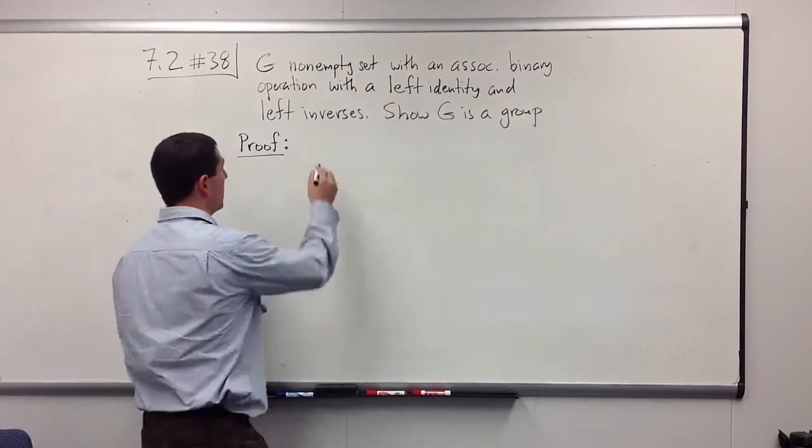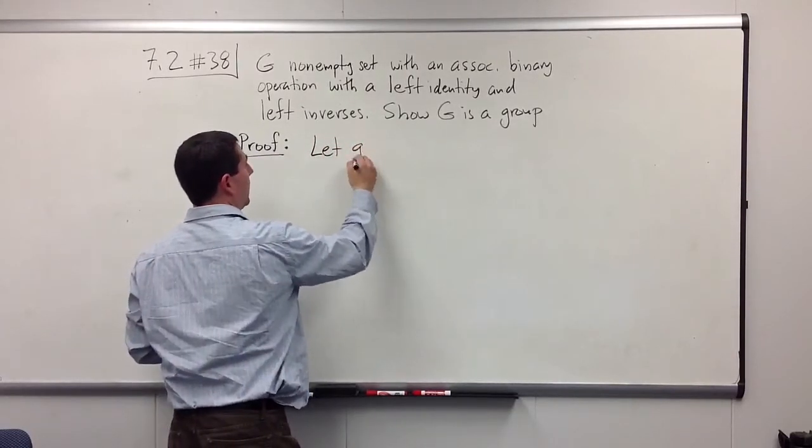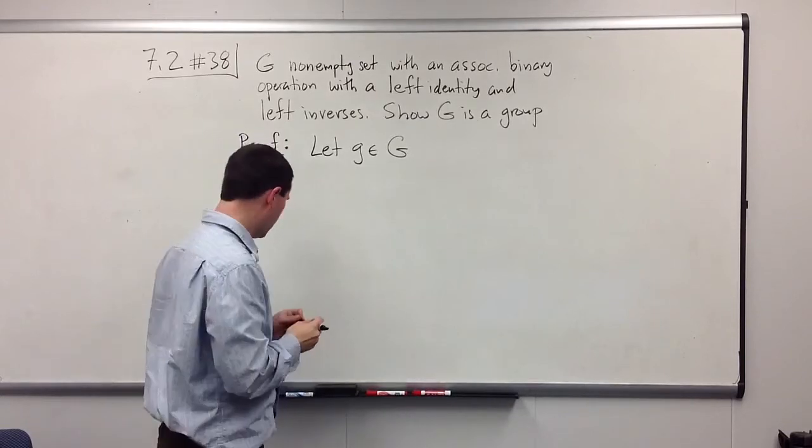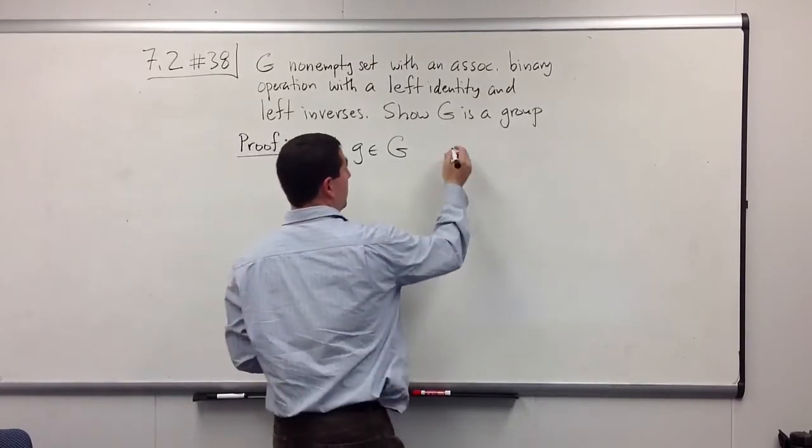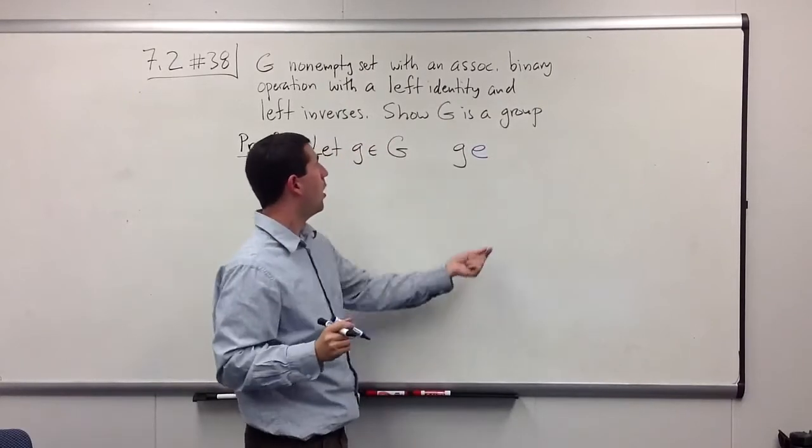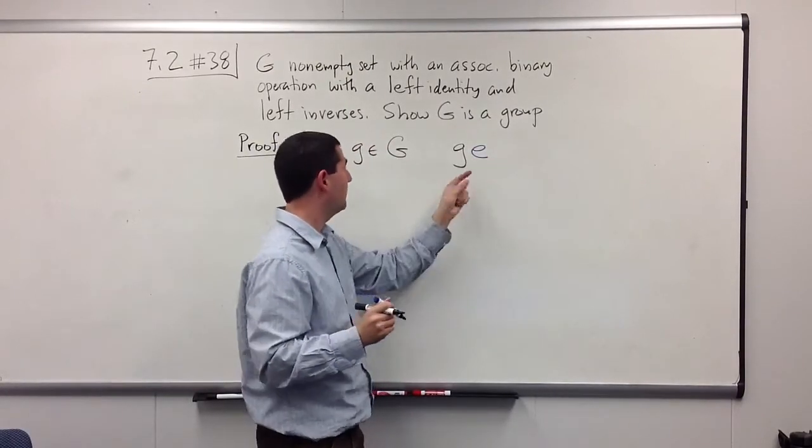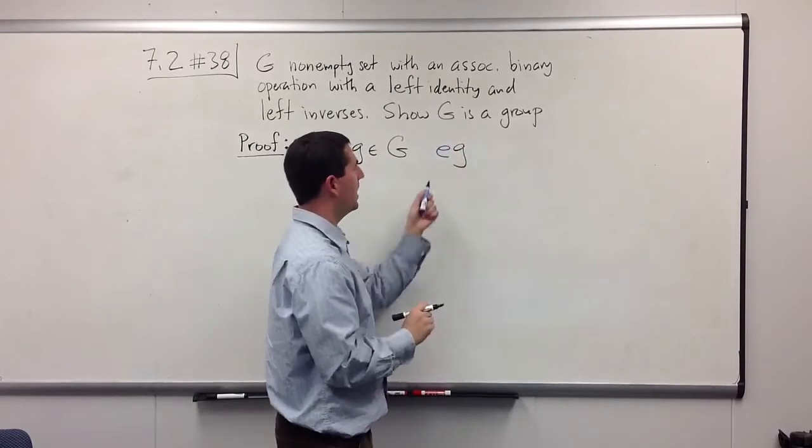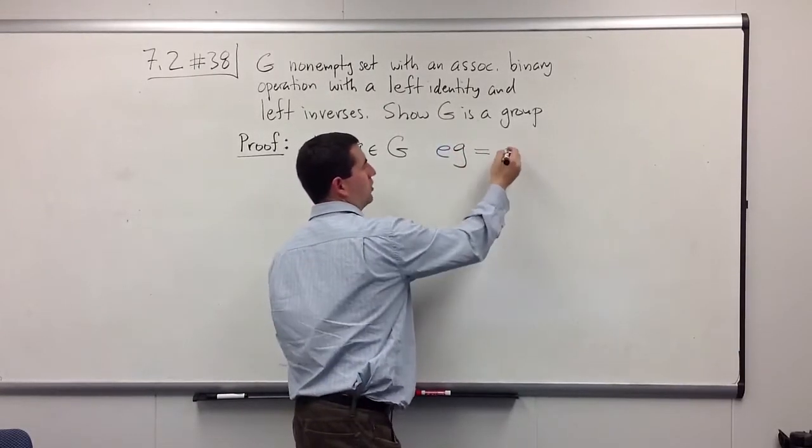So let's start. We're going to choose an element g in the group, some arbitrary element. And we know that if we multiply g by our left identity, we need the left identity on the left. If we multiply it by our left identity, it shouldn't change it.